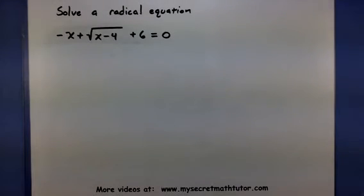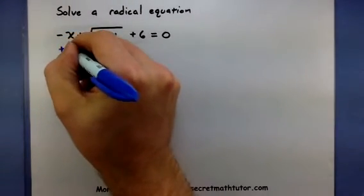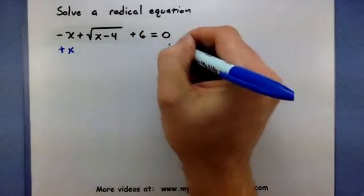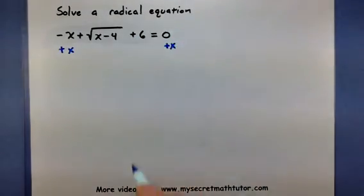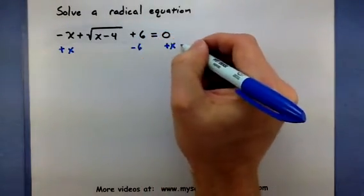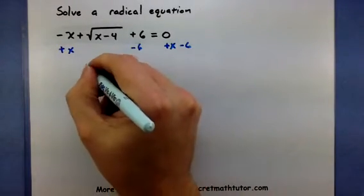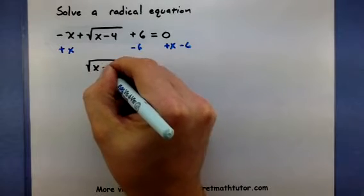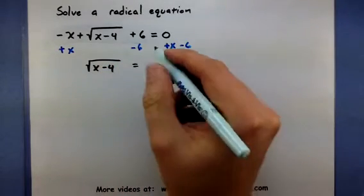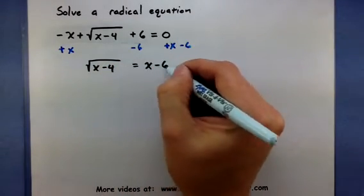So I have negative x plus the square root of x minus 4 plus 6 equals 0. So I need to isolate that radical. To start off, I'm going to add x to both sides and I need to subtract 6 from both sides. This will give me the square root of x minus 4 is equal to x minus 6.